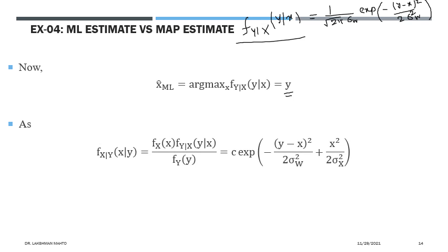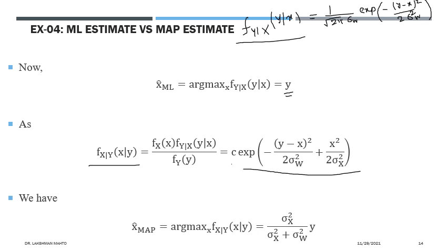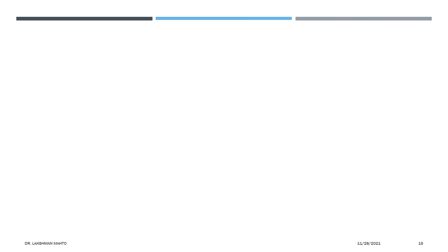For the MAP estimate, we compute the posterior distribution of X given Y using Bayes rule — multiplying the prior distribution of X (normal) by the likelihood (normal). After simplification, the posterior distribution involves an exponential with a combined argument from both the prior and the likelihood. Maximizing this posterior gives the MAP estimate of X, which incorporates additional information from the prior. If the prior belief about sigma is very good, the MAP estimate is much better than the MLE. MAP is a more generic and improved modern approach.